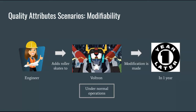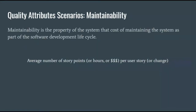Other options for environment could be when the system is undergoing high usage, or when the system is powered off, or something like that. The next attribute is maintainability — this is how costly it is to keep the system running so that it doesn't break down. Maintainability is not about adding new features; we just want the system to run as is. It is similar to modifiability, but slightly different.